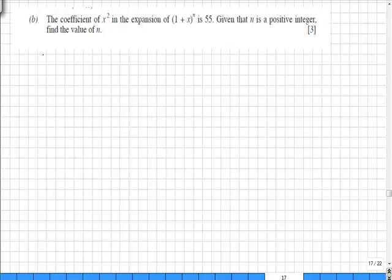So in the first instance we need to write down what the expansion of 1 plus x to the n looks like, and this should be learnt. It's 1 plus nx plus n(n-1) over 2 factorial x squared. There is no need to go any further because we are only interested in the coefficient of x squared, and we are given that that is equal to 55.